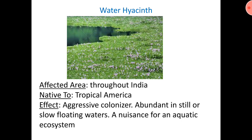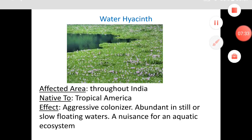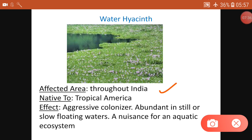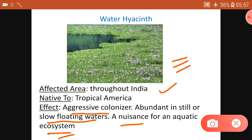Water Hyacinth is present throughout India — you can see so many lakes getting covered by it. The aquatic organisms in those lakes will have a problem getting sufficient oxygen because of this plant. It is an aggressive colonizer, thriving in still and slow-flowing waters. It is a big nuisance for the aquatic ecosystem.